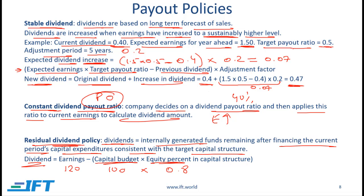Given the capital budget requirement of 100 and the equity percent in the capital structure of 0.8, the funding that needs to come from equity is 100 times 0.8, which is 80. The earnings generated are 120. So the dividend will be 120 minus 80, which is 40.